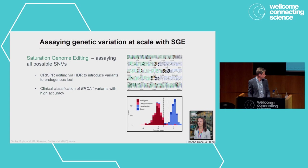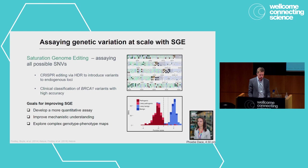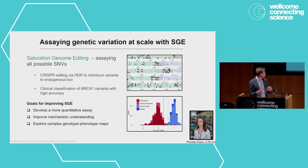When we started the group at the CRICK, what we were really out to do is ask how can we improve the assay. Some of the things we wanted to get at: can we make it more quantitative? Are there ways we can get more mechanistic information out of the assay? It's one of these holistic approaches to look at gene function. And can we, if we get more quantitative and mechanistic information, better resolve complex genotype-phenotype maps?